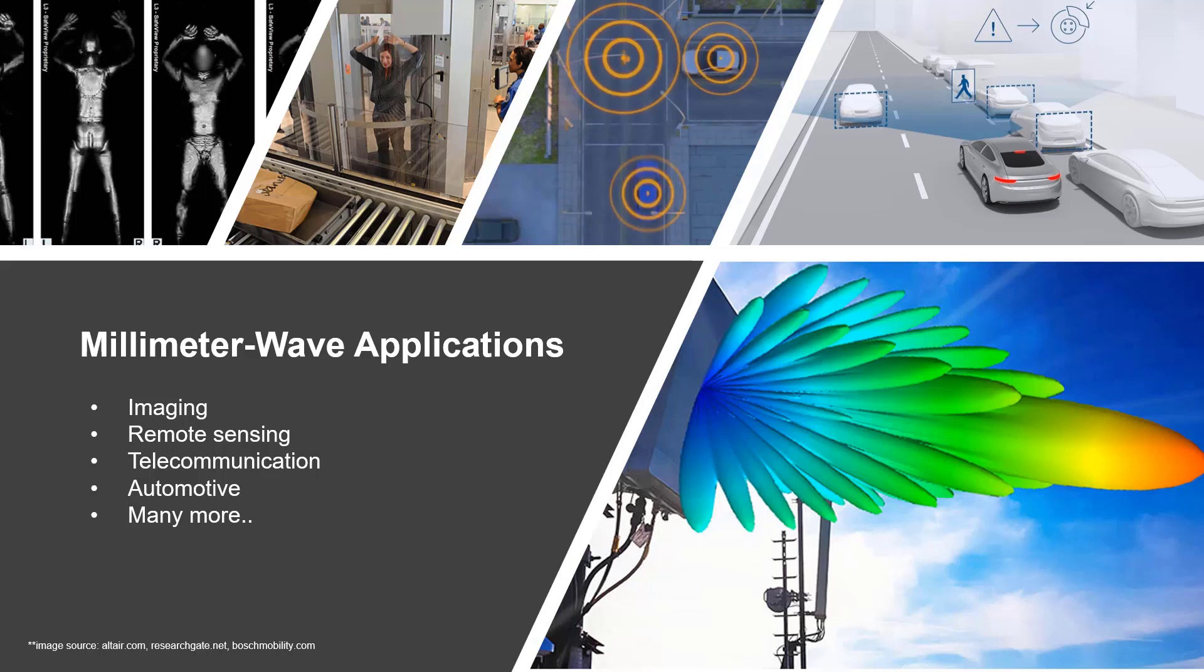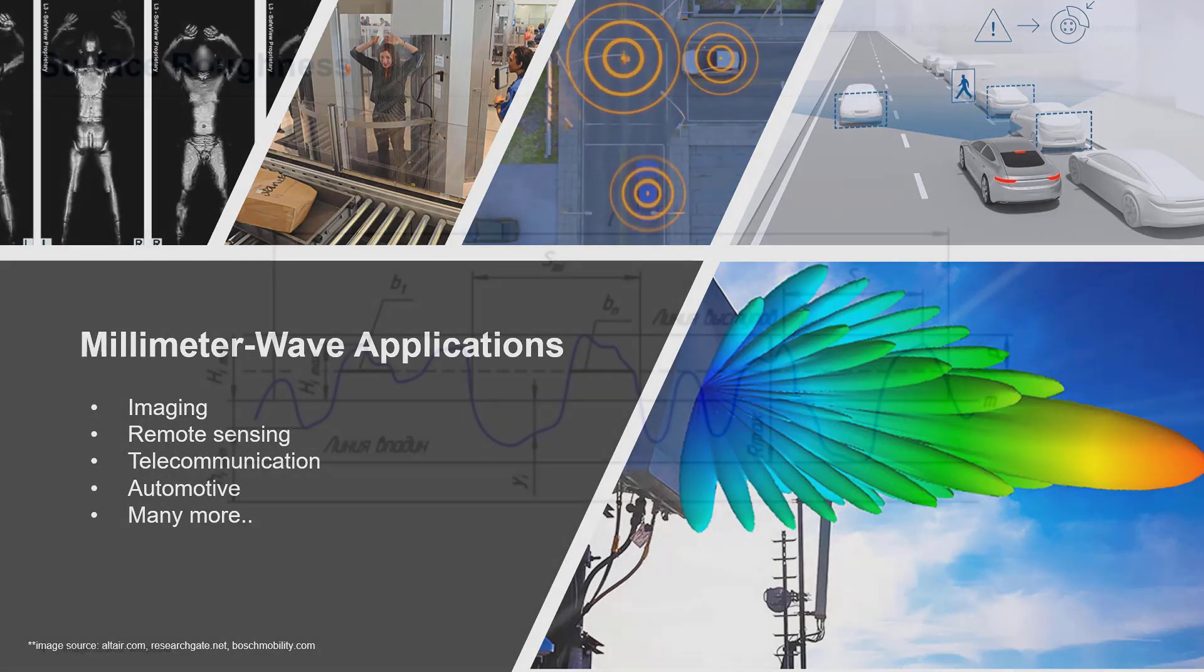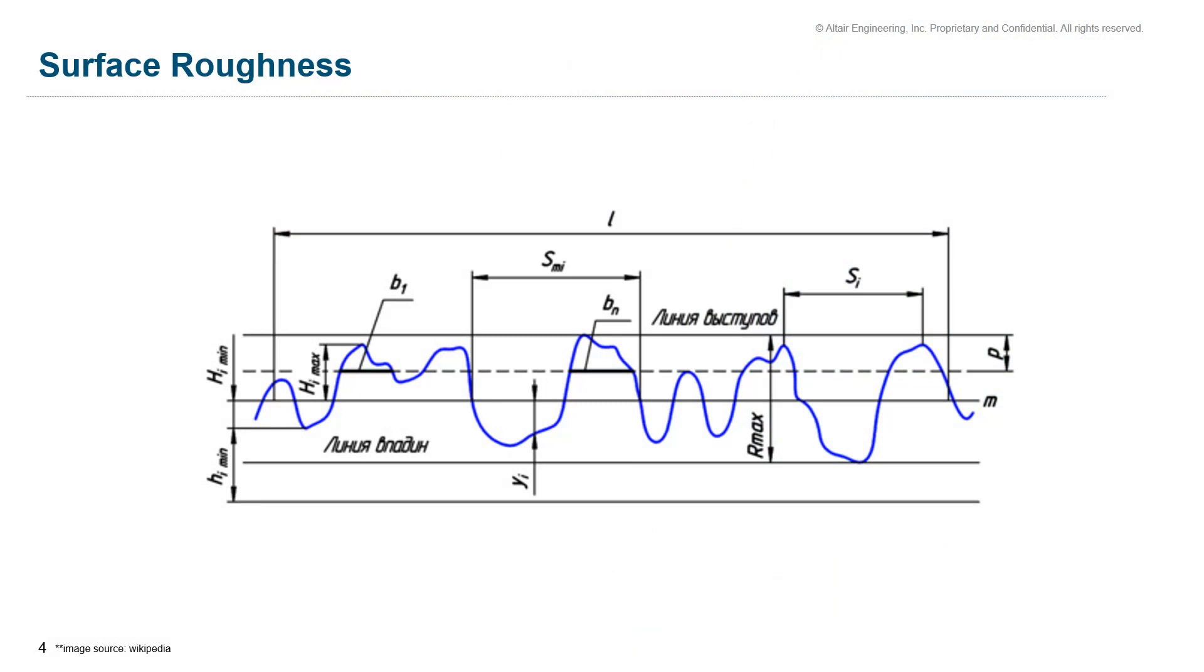To summarize in general, the overall loss of millimeter wave systems is significantly larger than that of a microwave system for a point-to-point link. Among other parameters, a factor that contributes to the degradation of the device performance at such high frequencies is surface roughness.